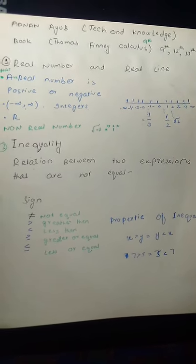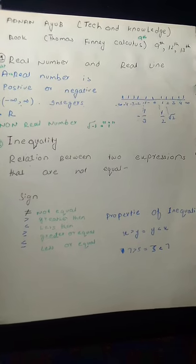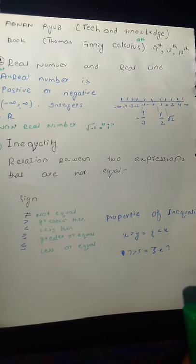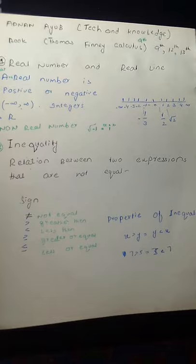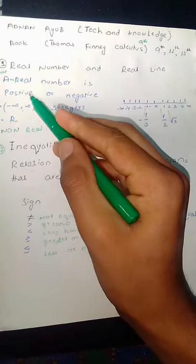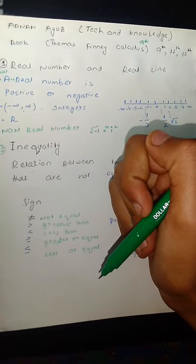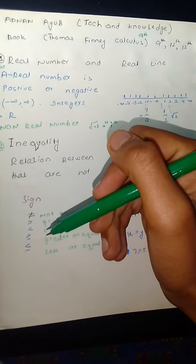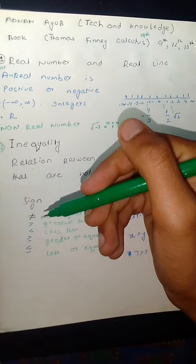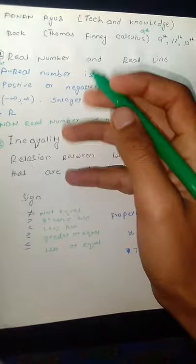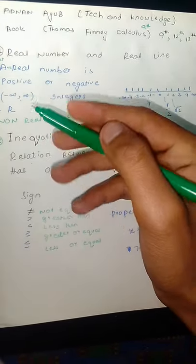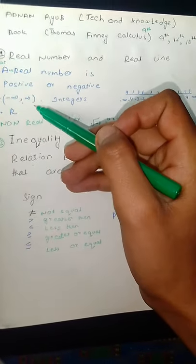The first topic is the real number and real line. The real number is the set of numbers that contain positive or negative numbers. The real number ranges from minus infinity to infinity.